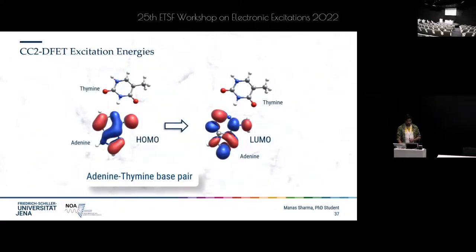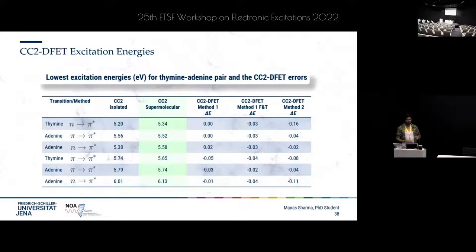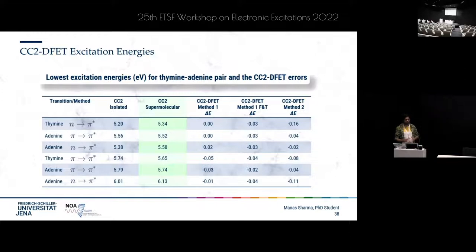For the adenine-thymine base pair, again we look at CC2 excitation energies of the total system in the green column, and the errors for different methods in the remaining columns — here for the first six excitation energies. DFET with Method 1 performs very well, with a maximum error of just 0.05 eV. Method 1 with freeze-and-thaw gives similar results. Method 2 does not give as large errors as before, so it sometimes works and sometimes does not.